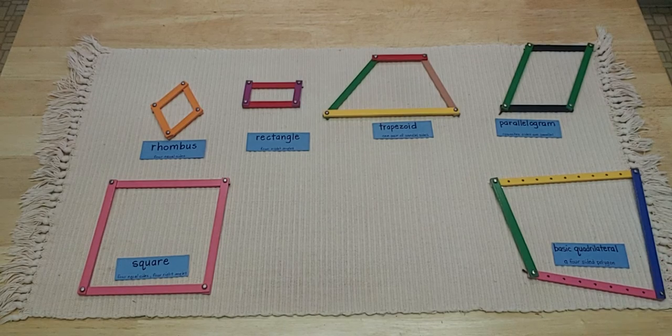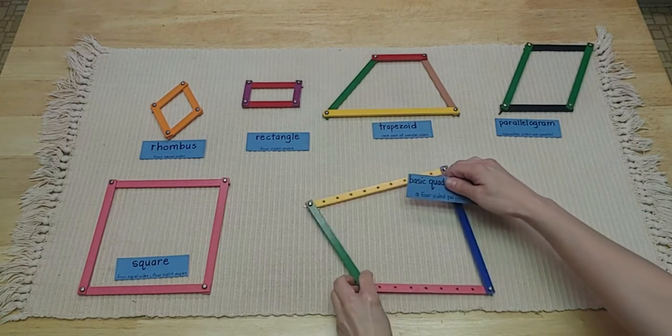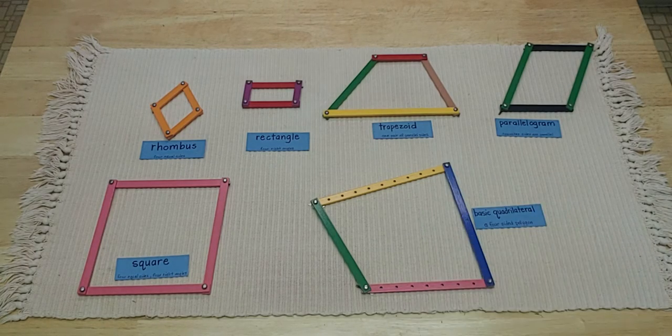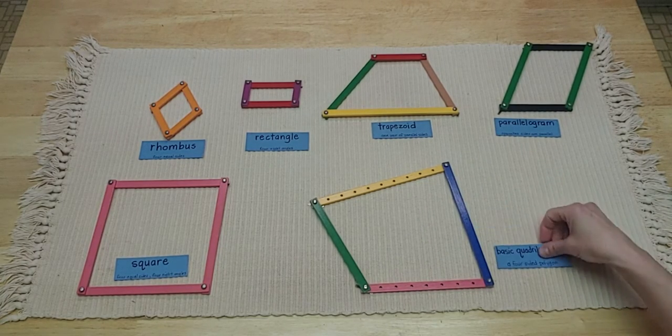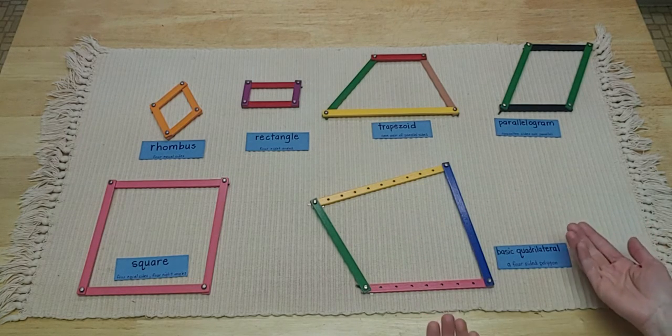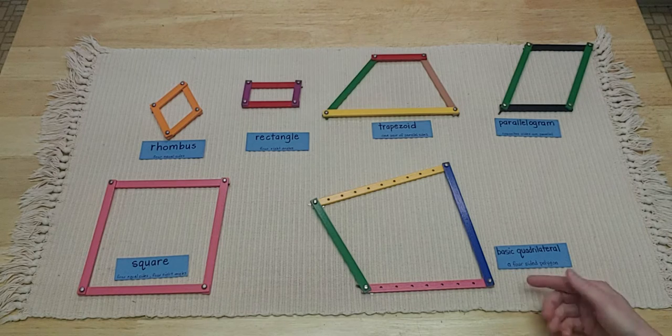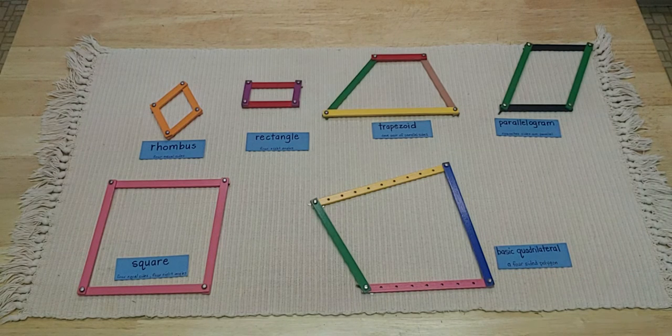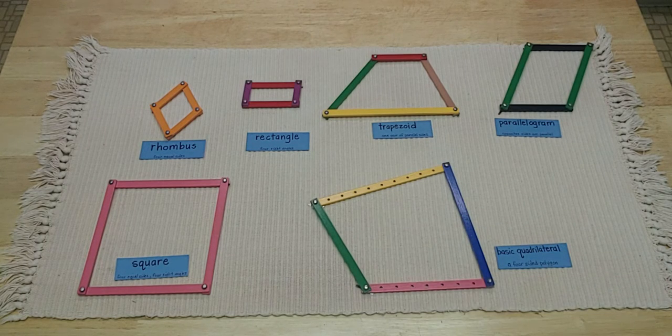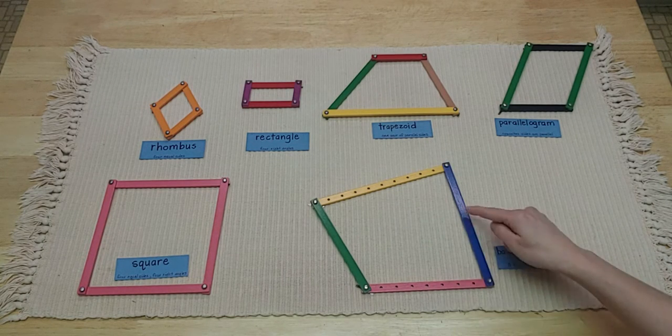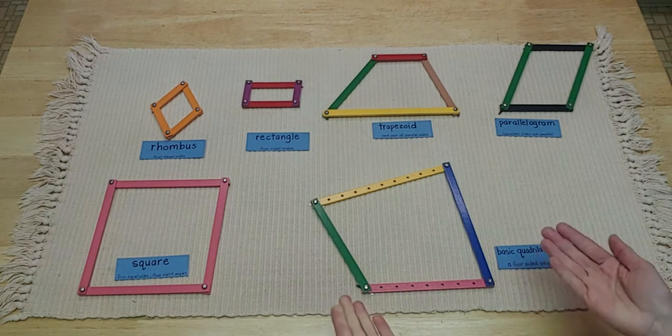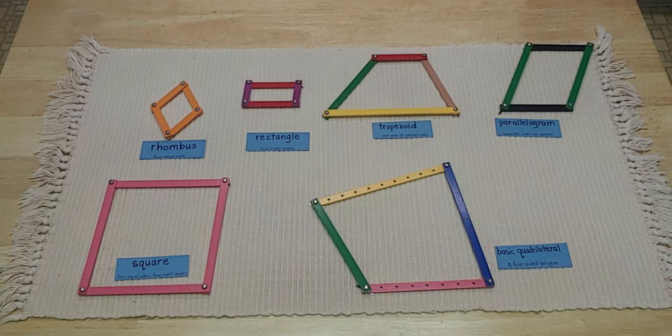The first quadrilateral I want to show you is called our basic quadrilateral. I just dug into our box of sticks and I found four different colors. So I have my four sides, so I know it's a quadrilateral. This is just a basic quadrilateral because they're all different size sides, all different lengths. So this is just our basic four-sided quadrilateral.